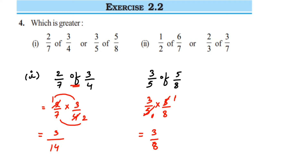There is one way which is quite lengthy — you take the LCM, make the denominators the same, then compare the numerators. You would need the LCM of 14 and 8. But there is another, better method you can apply to any numbers directly: we have 3/14 and 3/8, and we're going to cross multiply.